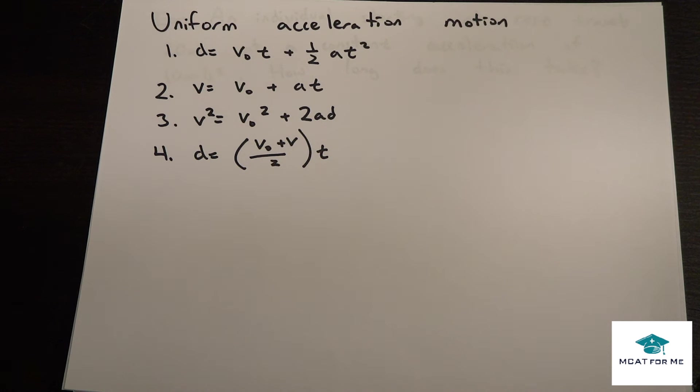So now we're going to be looking at uniform acceleration motion. And so what this is is just those typical questions where they give you a certain object is moving at a certain speed in this amount of time and it has this acceleration and they want you to find different aspects of it.